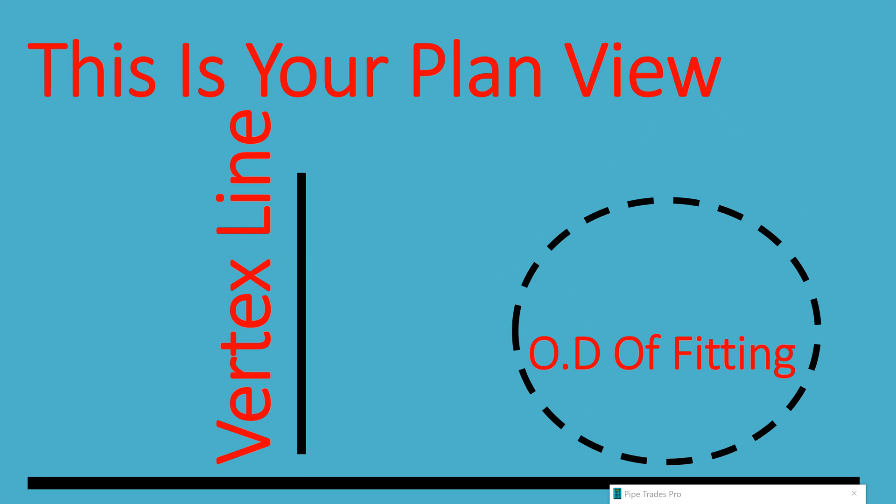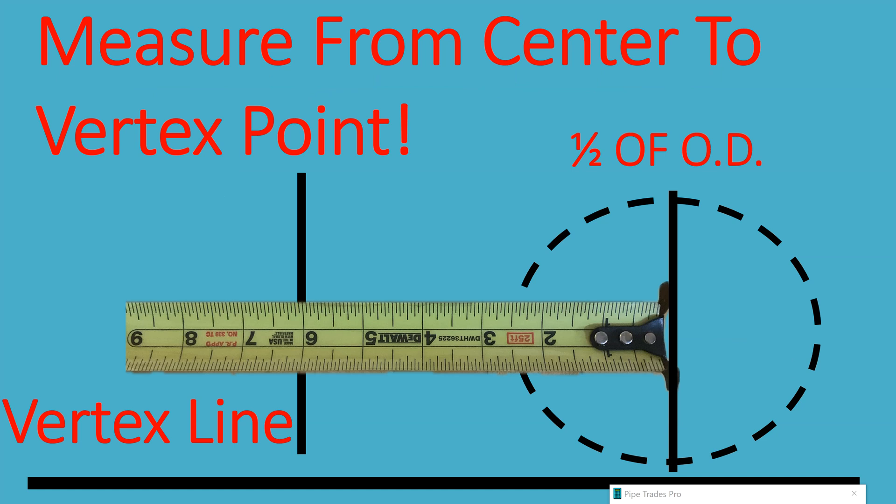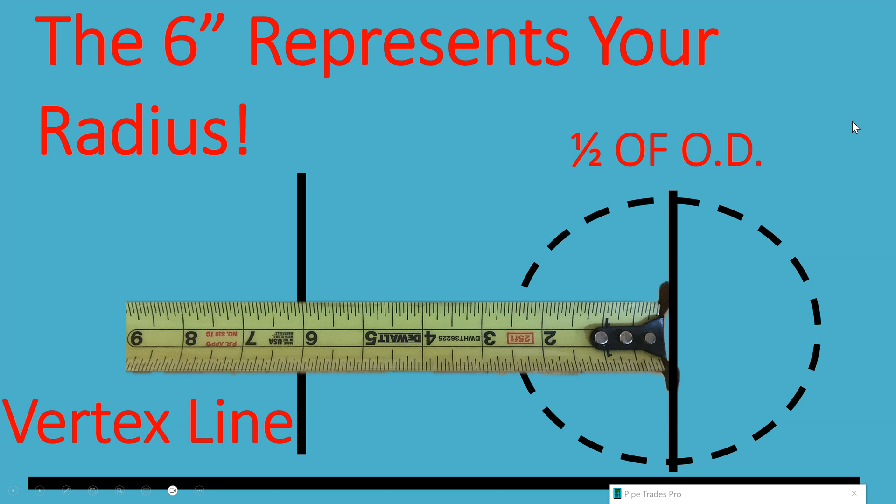Now we're going to take our measuring device - inside read rule, tape measure - and we're going to cut half of the OD and let the ruler do our math. So we're holding it at 2¼, so our OD must have been 4½. Now we're going to measure back to that vertex line. As you can see here in this illustration, we have 6 inches. So the tape measure should be in the center of that circle or half of the OD. Measure back to the vertex line. The 6 inches represents your radius of the fitting, which we did not know until we put the square on.